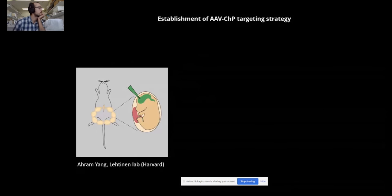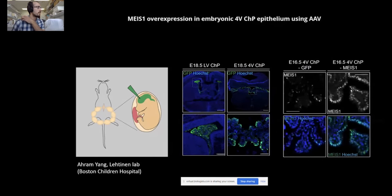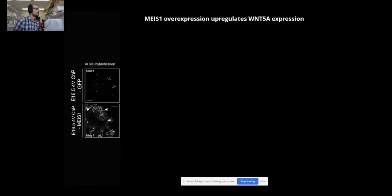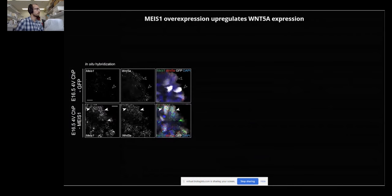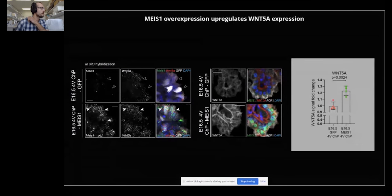To better understand this interaction between MEIS1 factor and WNT5A, we employed an adenoviral-based strategy, thanks to great collaboration especially with the postdoc from Maria's lab, Ahram. We used this model for efficient targeting of embryonic choroid plexuses and for overexpression of MEIS1 in the choroid plexus epithelium. So what happens when you overexpress MEIS1 during plexus embryogenesis? We noticed that once we induced MEIS1 overexpression in the plexus epithelium, we saw upregulation of WNT5A in the tissue, which led to increased WNT5A protein levels.